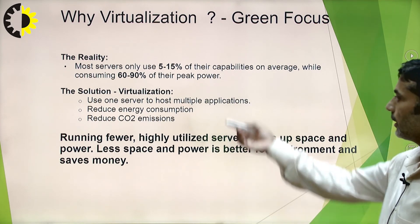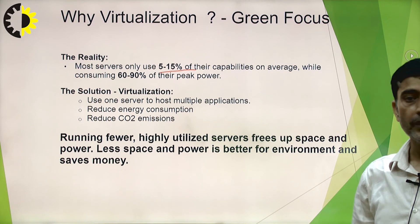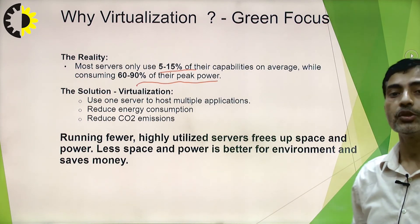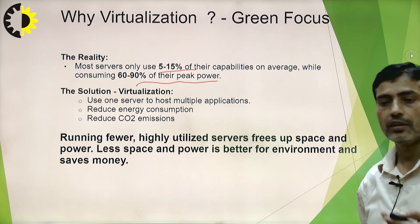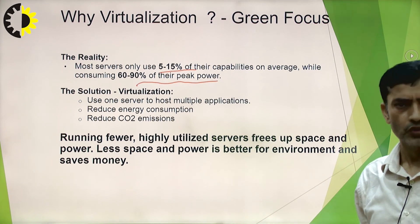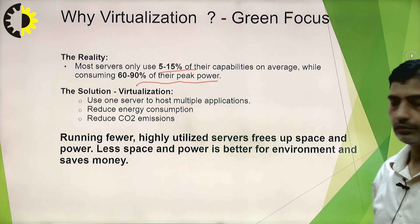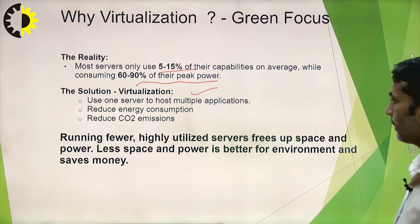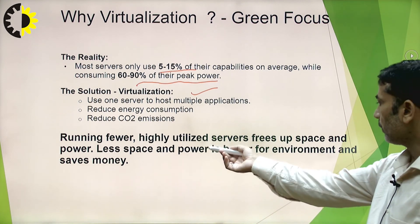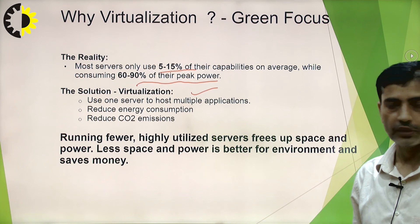Why do we use virtualization? Most servers only use 5 to 15 percent of their capabilities on average, while consuming 60 to 90 percent of their peak power — meaning there is much waste of resources. If you install hardware and a server for individual use, it is not in use most of the time. The solution is virtualization: use one server to host multiple applications, reduce energy consumption, and reduce CO2 emissions. Running fewer but highly utilized servers frees up space and power, saves money, and promotes green IT.